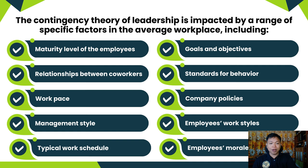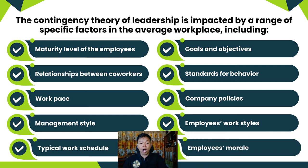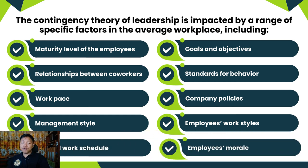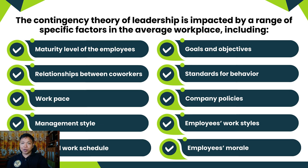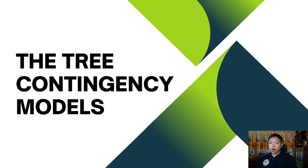Other factors include relationship between co-workers, work pace, management style, typical work schedule, goals and objectives, standards for behavior, company policies, employees' work styles, and employees' morale. You really have to consider and know these things, especially in managing a group. To understand this more, we will look at the three different models of contingency leadership.